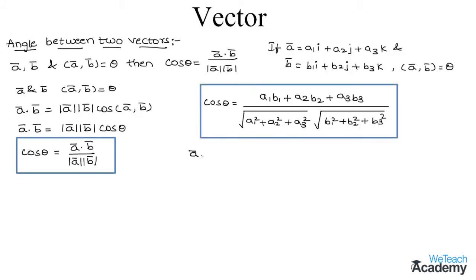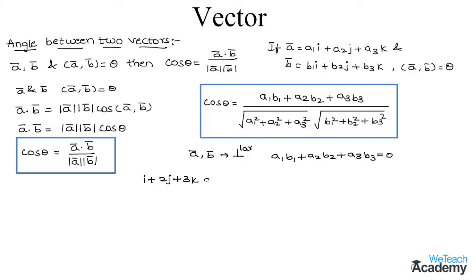Note that if vectors a bar and b bar are perpendicular, then the value of a1·b1 + a2·b2 + a3·b3 equals 0. Now let us explain this concept with a small example: find the angle between the vectors i + 2j + 3k and 3i − j + 2k.